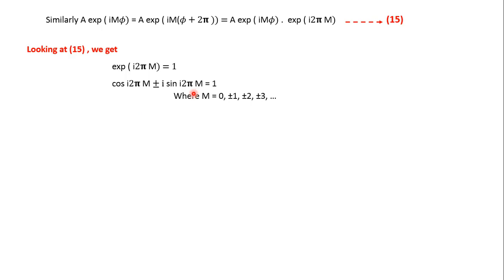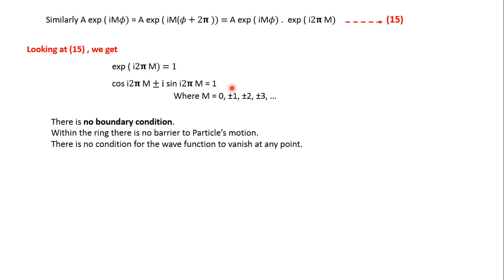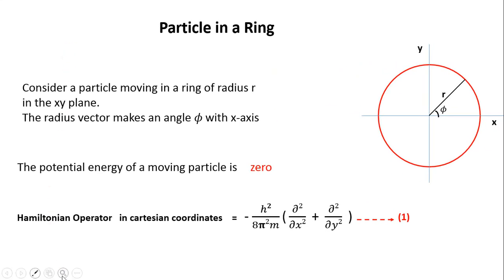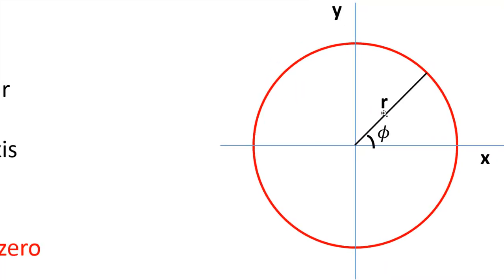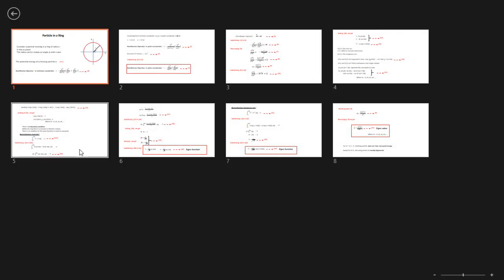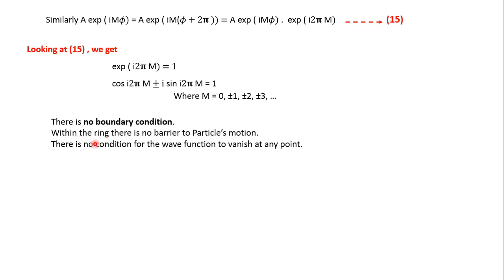For example, when m = 0, sin 0 = 0 and cos 0 = 1. Within a ring there is no boundary — the particle can be found anywhere in the ring as long as the radius is r. The value of r is assumed constant. There is no condition for the wave function to vanish at any point, and so there is no boundary condition.